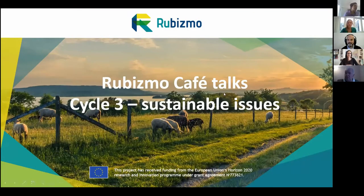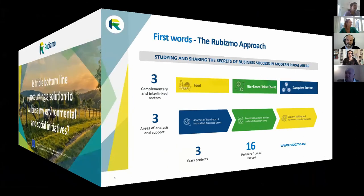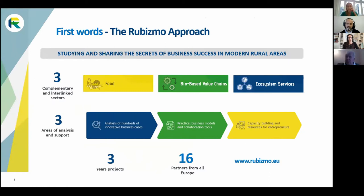Welcome everybody — this is the 10th RUBISMO cafe talk, an inspirational talk in the framework of the RUBISMO project. We work with rural areas and innovative business models in the food value chain, the bio-based value chain, and ecosystem services. We look at different aspects including entrepreneurship, supporting actors, and the ecosystem around them, and we develop training and capacity-building material.